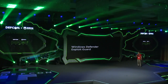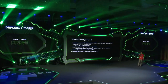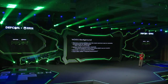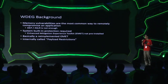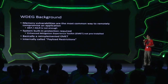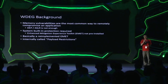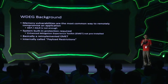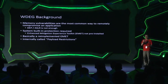Next I'm going to talk about Windows Defender Exploit Guard. Exploit Guard is used to protect against memory vulnerabilities, which are the most common way to remotely compromise an application such as a web browser. We do have DEP or ASLR on modern operating systems, but this is not enough — DEP and ASLR have too many bypasses. The Exploit Guard is basically a system-level reimplemented EMET, internally called payload restrictions, because it restricts an attacker's ability to deliver a malicious payload after gaining control over the execution flow.